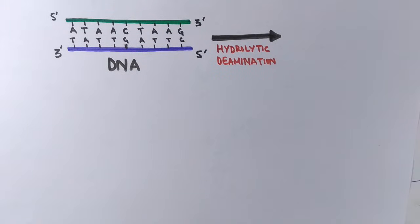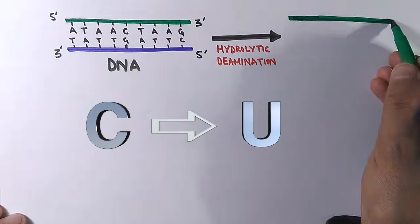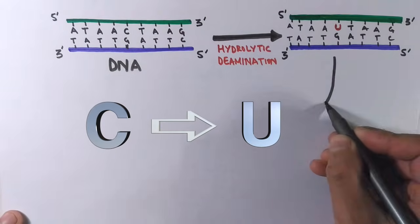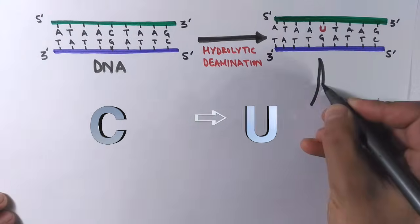The cytosine base in the strand changes into uracil. The chemical damage or radiation damage changes this cytosine base into uracil. Now in the DNA molecule we have uracil instead of cytosine.